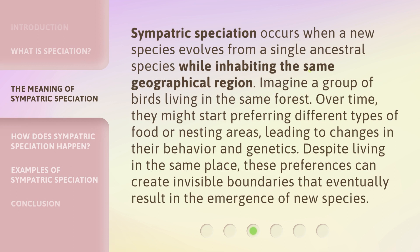Sympatric Speciation occurs when a new species evolves from a single ancestral species while inhabiting the same geographical region. Imagine a group of birds living in the same forest. Over time, they might start preferring different types of food or nesting areas, leading to changes in their behavior and genetics. Despite living in the same place, these preferences can create invisible boundaries that eventually result in the emergence of new species.